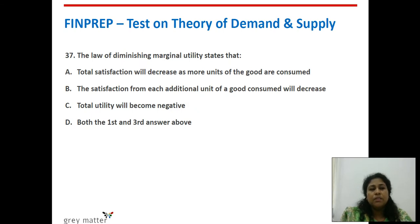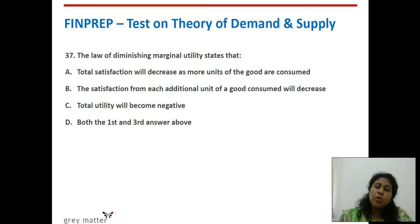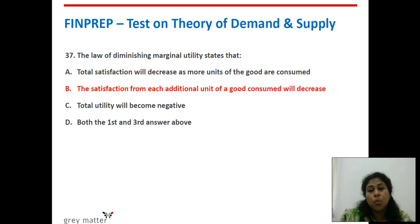Thirty-seventh question: the law of diminishing marginal utility states that what? As you consume more and more additional units of a commodity, total utility will increase but at a decreasing rate. In other words, as you consume more units, marginal utility will decrease. The right answer is: the satisfaction from each additional unit of a good consumed will decrease.